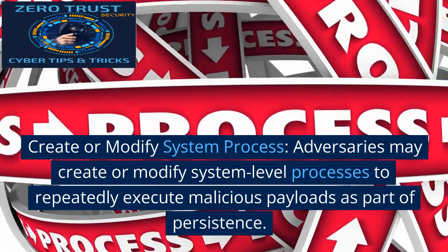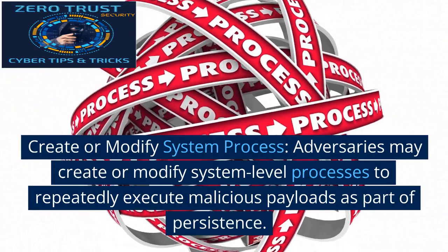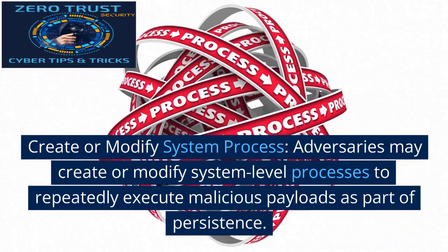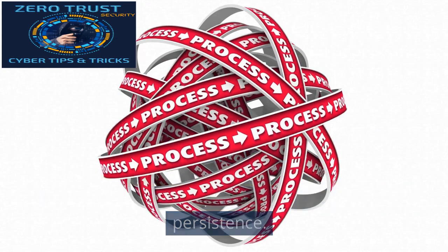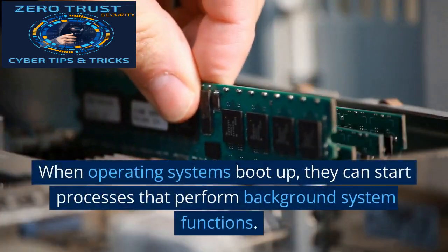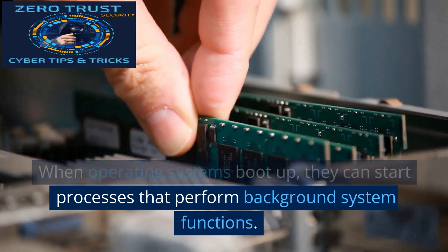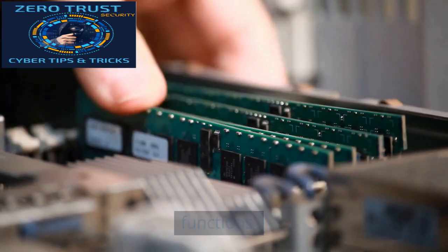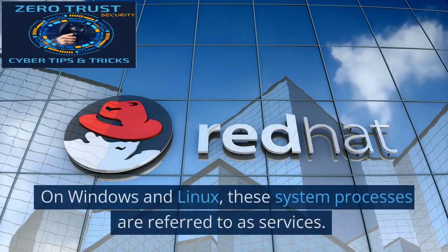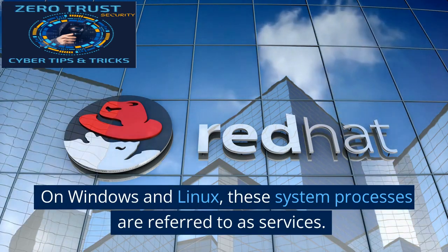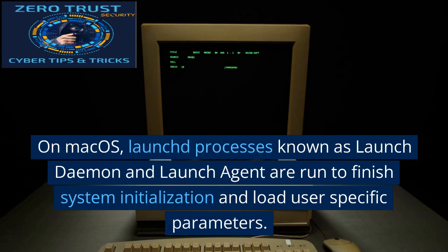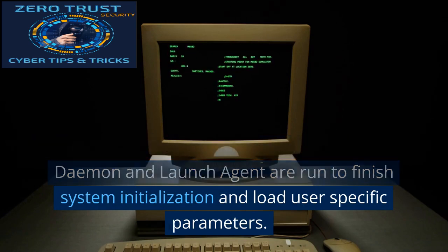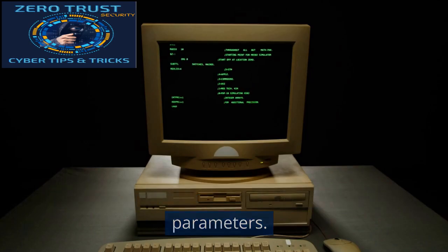Create or Modify System Process: Adversaries may create or modify system-level processes to repeatedly execute malicious payloads as part of persistence. When operating systems boot up, they can start processes that perform background system functions. On Windows and Linux, these system processes are referred to as services. On macOS, launch processes known as launch daemon and launch agent are run to finish system initialization and load user-specific parameters.